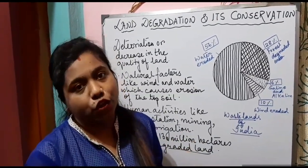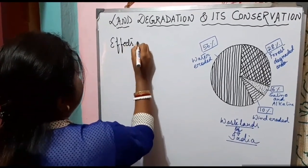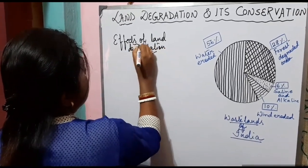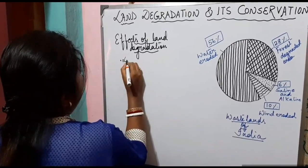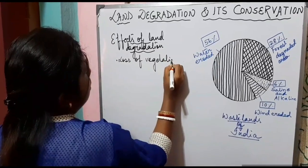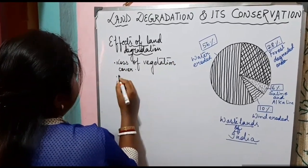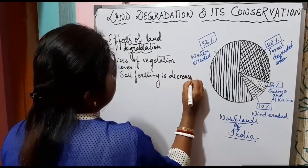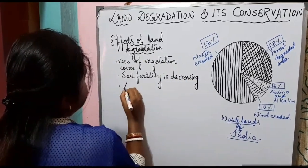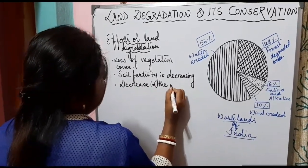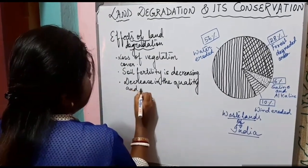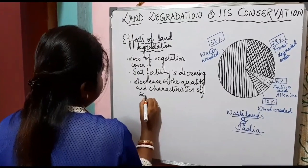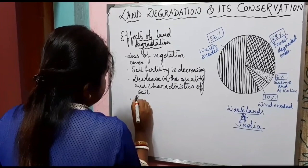Now let us move ahead with the effects of land degradation. The first effect of land degradation is loss of vegetation cover. Soil fertility is decreasing, and there is a decrease in the quality and characteristics of soil.